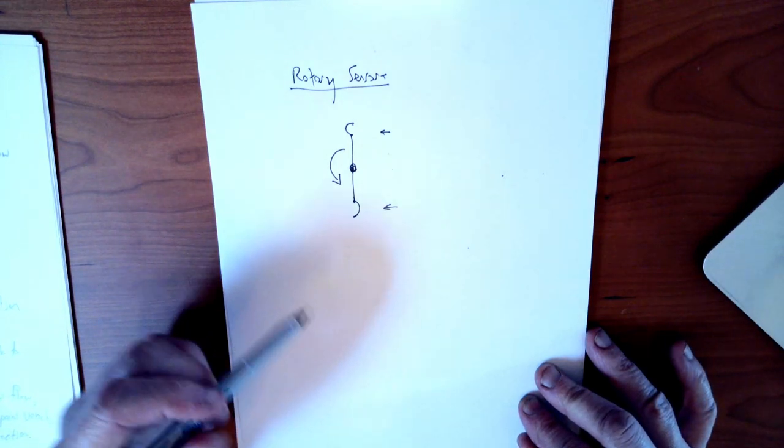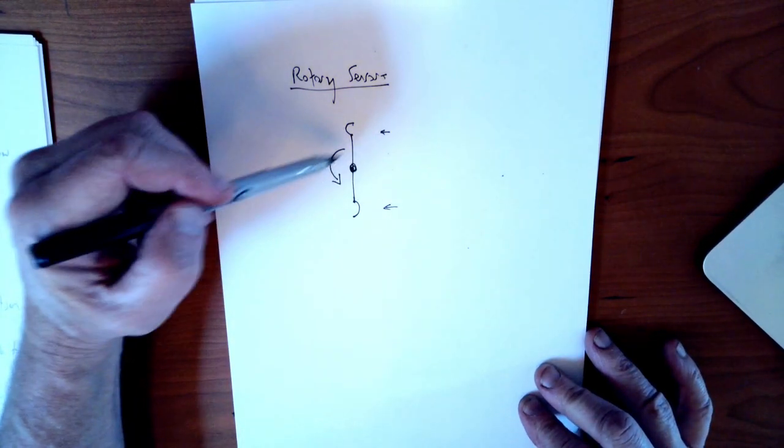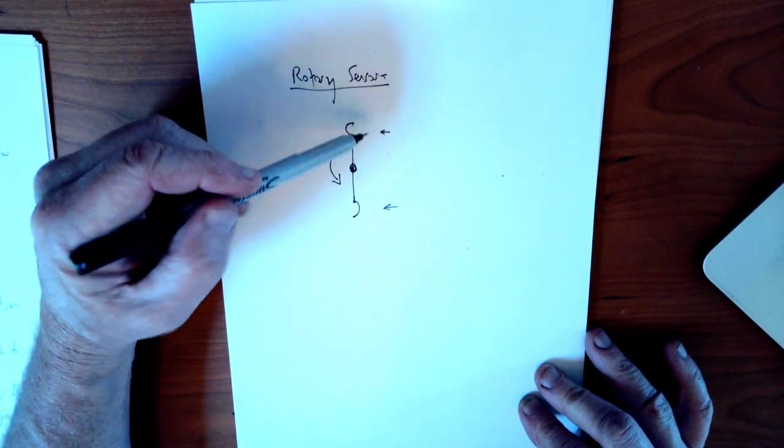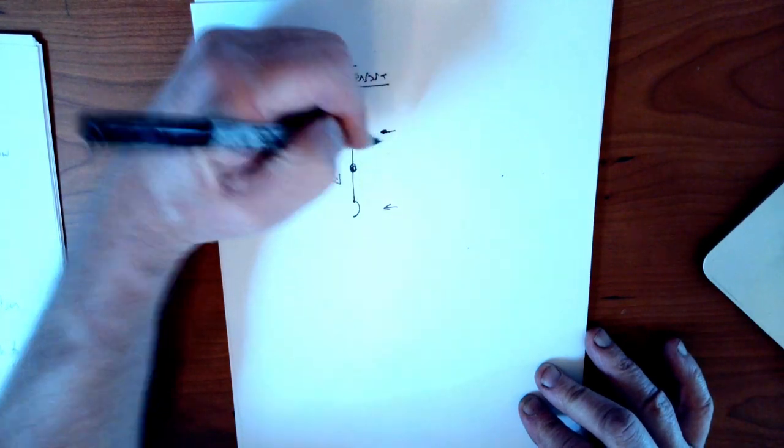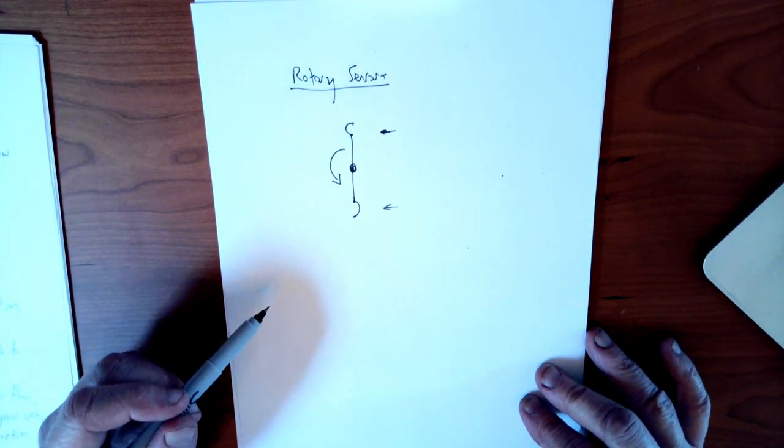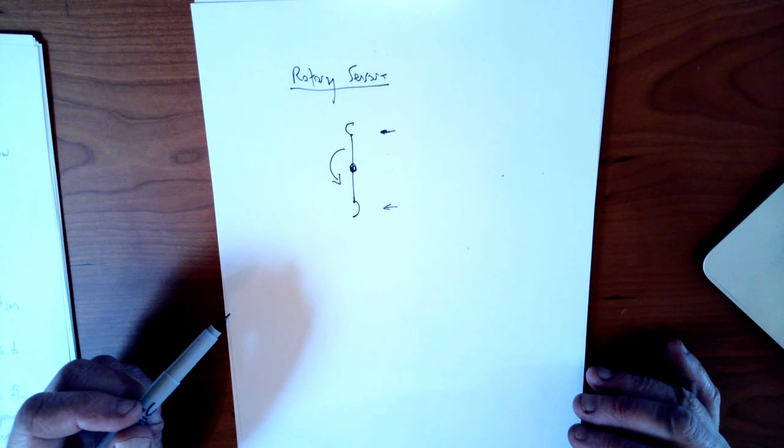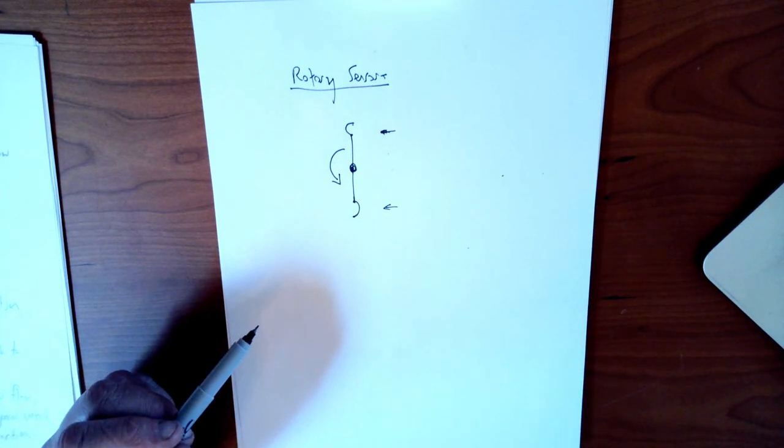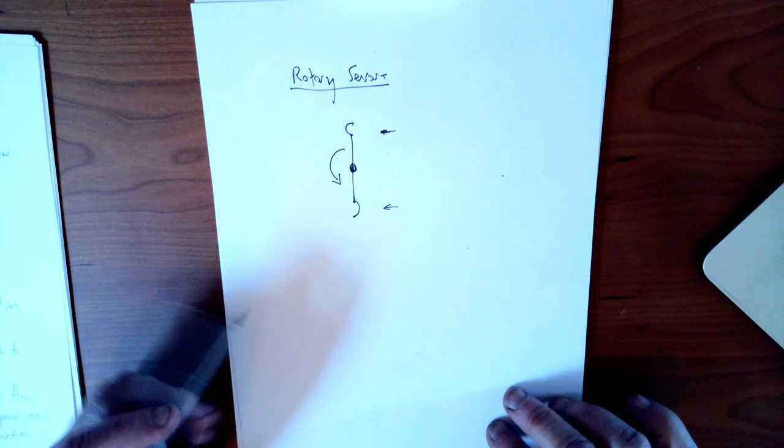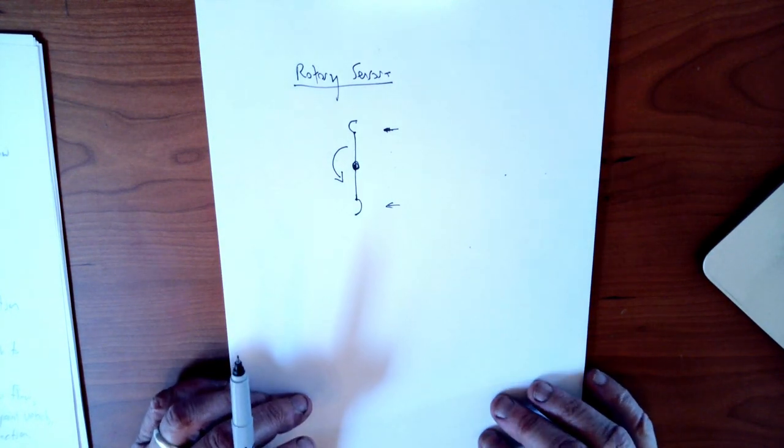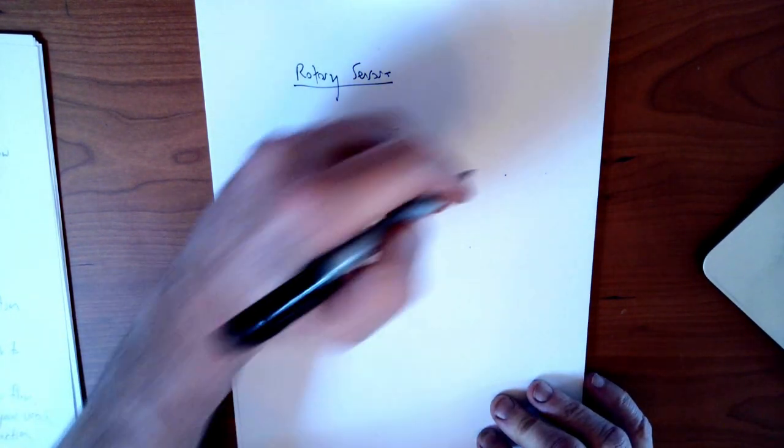So all you need to do is calibrate the speed of rotation with the flow velocity, and you have a way of measuring flow velocity. This is very popular for wind. Weather stations use this because it is completely insensitive to direction. So if you're only interested in wind speed and you're not interested in direction, this is a good technique.